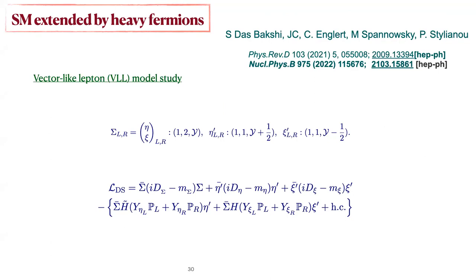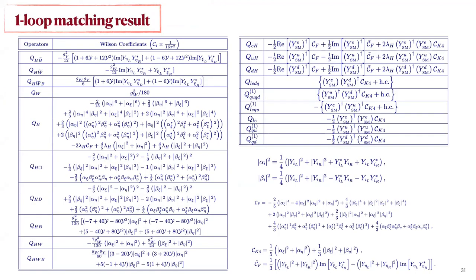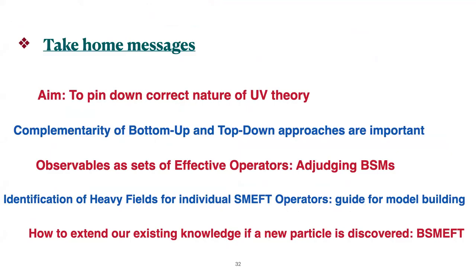The operator O_W-tilde (epsilon*W^3) cannot be generated at one loop; it is dominantly generated only at two-loop level, which we have calculated analytically. Adding vector-like leptons, sigma and eta as heavy vector-like fermions, the one-loop matching gives CP-violating operators as the first three results. Take-home message: the complementary bottom-up and top-down EFT approaches are both essential; observables expressed in terms of effective operators bridge theory and experiment and guide model building.